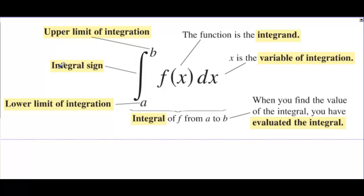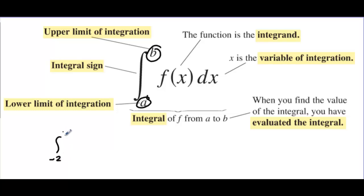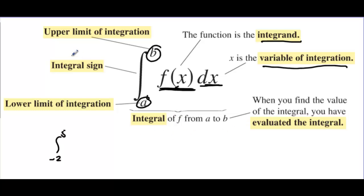Let's look at the parts of the integral. We have the integral sign and the limits of integration — the lower limit and the upper limit. If you're integrating from negative two to five, the lower limit goes on the bottom and the upper goes on the top. Then we're integrating f of x, which is called the integrand. The dx indicates which variable we are integrating on. This whole thing is said 'integral of f from a to b.' When you find the value, you have evaluated the integral. For example, the integral from negative two to five of 2x plus 3 dx ends up being some value.